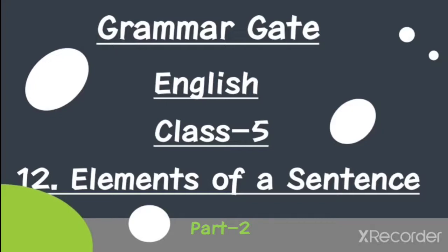Today we will see what is subject and object in a sentence. First of all, take your grammar guide textbook and open at page number 87. We will continue with subject and object.